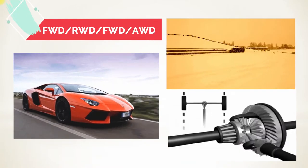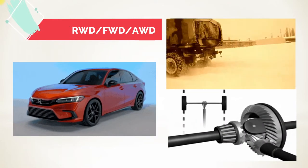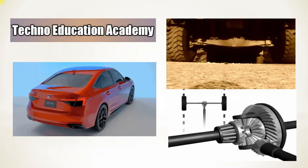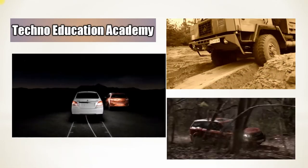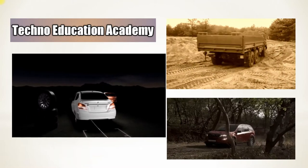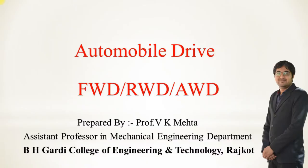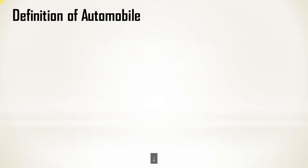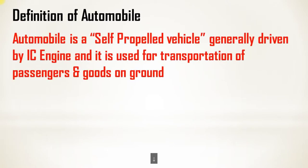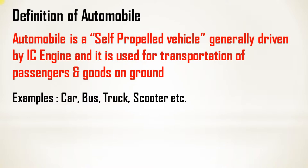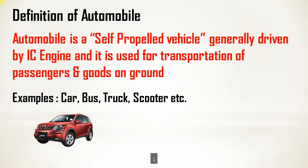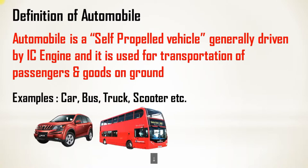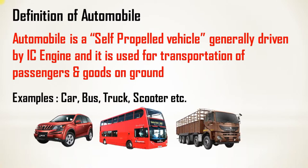In this video lecture we will discuss the basic difference between front wheel drive, rear wheel drive, and four wheel drive. First of all, what is the definition of automobile? An automobile is a self-propelled vehicle, generally driven by an IC engine, and it is used for transportation of passengers and goods on ground. Examples are car, bus, truck, scooter, etc.